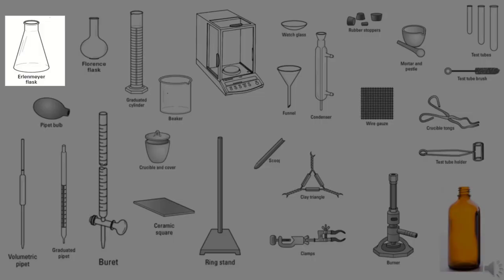Erlenmeyer flask, used to hold liquids. The small upper opening slows evaporation. So, some volatile liquid, a flask is a better choice than a beaker. The shape also makes it suitable for mixing and swirling liquid during a titration.